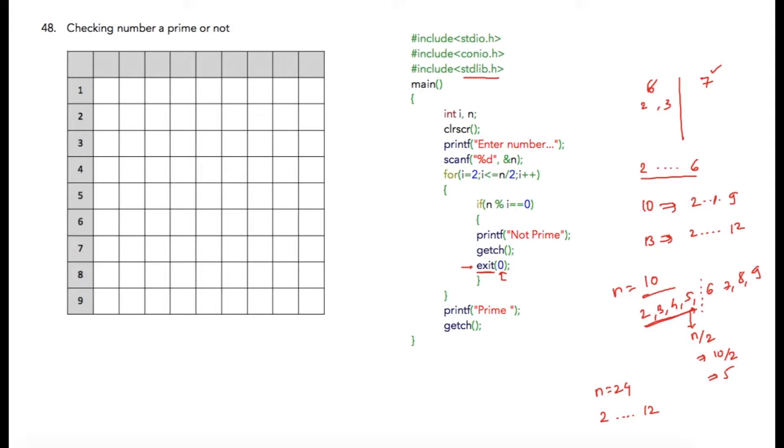So that is how we have optimized this program. We have reduced number of iterations by half. Now let us see how we can write program for this. I am using i for iterating variable which will be used in my loop, and n is the number that user is going to provide.